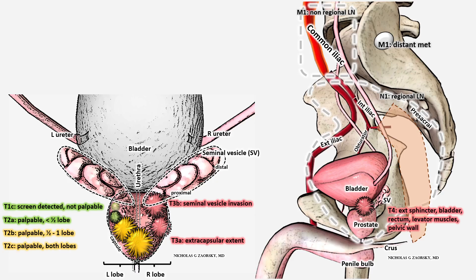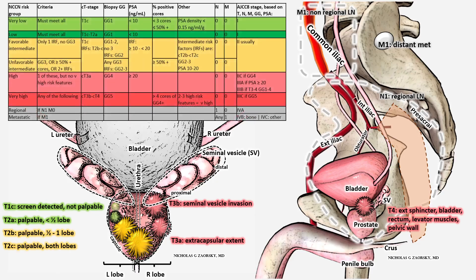The other stage you'll see is the M stage — M is metastatic. Is there distant metastatic disease? Here I'm showing one example of a distant metastasis in the bone, in the sacrum specifically. You can also have distant metastases in other bones of the body. Non-regional lymph nodes count as M1 disease — so if you have lymph nodes in the abdomen or somewhere else throughout the body, these would also count as M1 disease. All of this is part of the AJCC staging system.